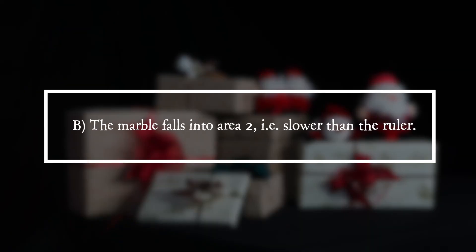It is answer B. The ball falls into area 2, i.e. slower than the ruler.